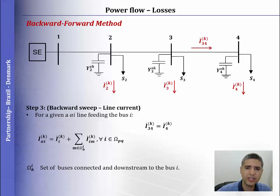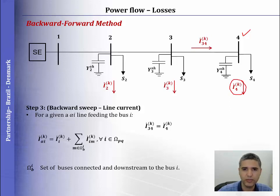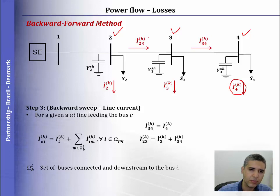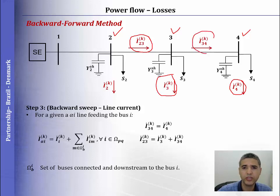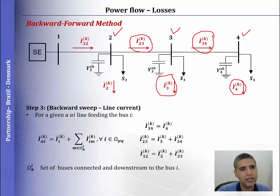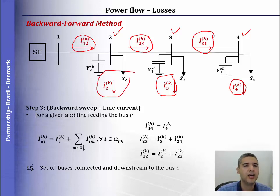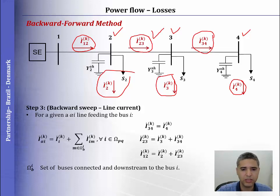The current from bus 3 to bus 4 is the current injected at bus 4. The current from bus 2 to bus 3 is the current injected at bus 3 plus the current from bus 3 to 4. And finally, the current through line 1–2 is the current injected at bus 2 plus the current from bus 2 to bus 3.